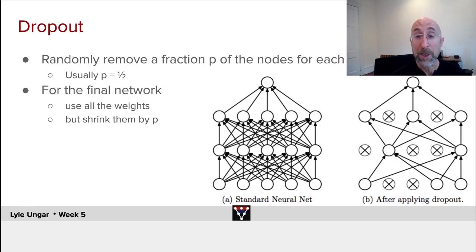At the end when you have converged or partially converged, take the final network and shrink all of the weights by a factor of p. Because during all the training you only had half of the weights coming in, now you've got twice as many weights going in, so divide them by two.